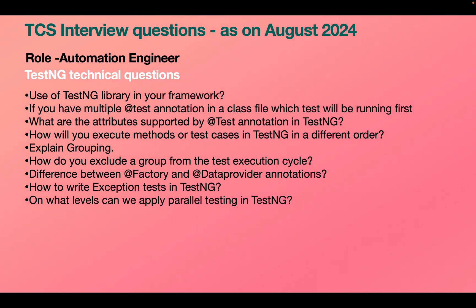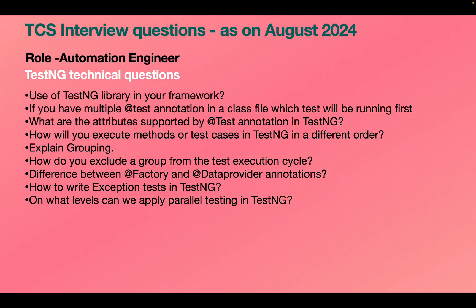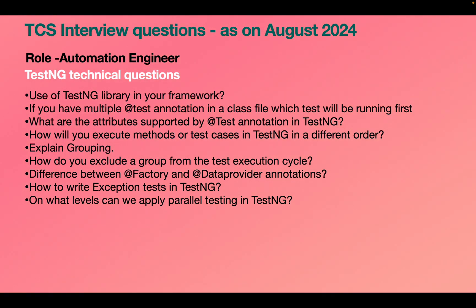What are the attributes supported by the @Test annotation in TestNG? There are many — priority, dependsOnMethods, and others. How will you execute test cases in a different order? Use the priority attribute. Explain grouping — we group UI-related, mobile-related, and API-related test cases. You modify both the test file and the XML file. To exclude a group from execution, add the 'exclude' keyword in your XML file and run it.